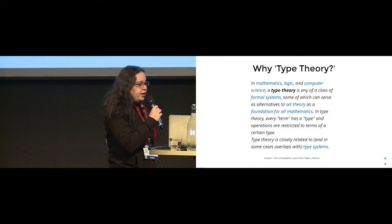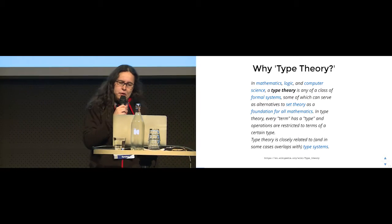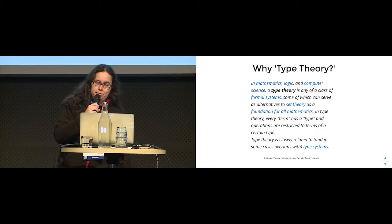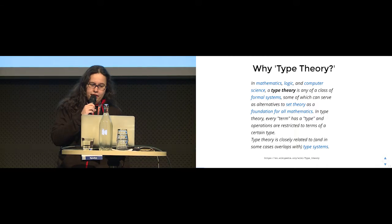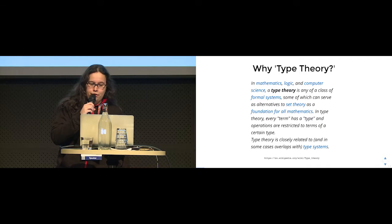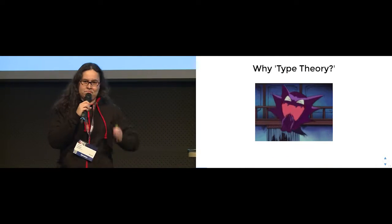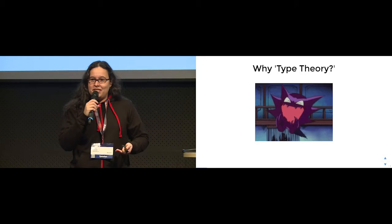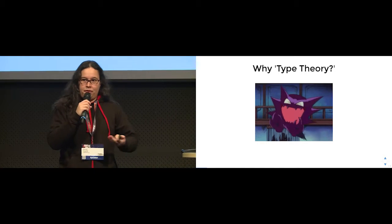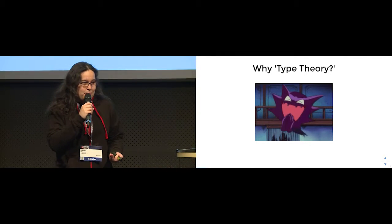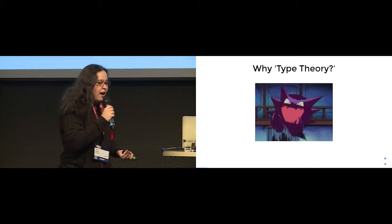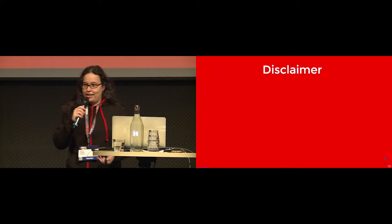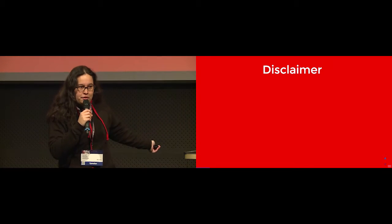There is this definition from Wikipedia: in mathematics, logic, and computer science, Type Theory is a class of formal systems, some of which can serve as alternatives to set theory as a foundation for all mathematics. In Type Theory, every term has a type and operations are restricted to terms of a certain type. That definition means lots of things, but it doesn't really make sense when you first read it. Asking Wikipedia is not always efficient, so I hope this session helps you understand what that actually means and how to make good use of it.